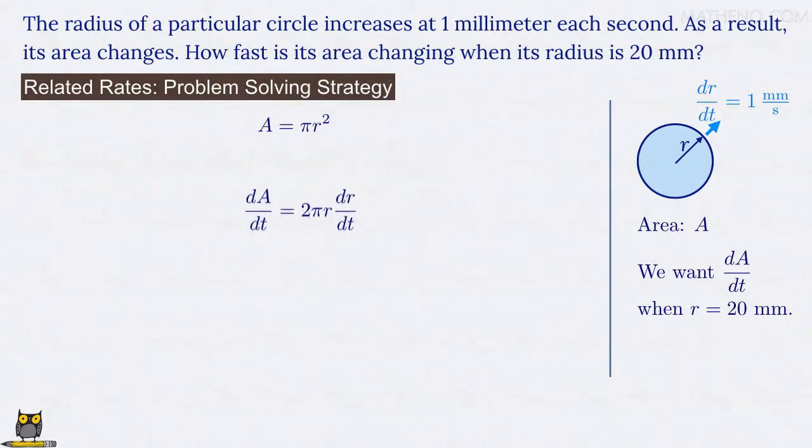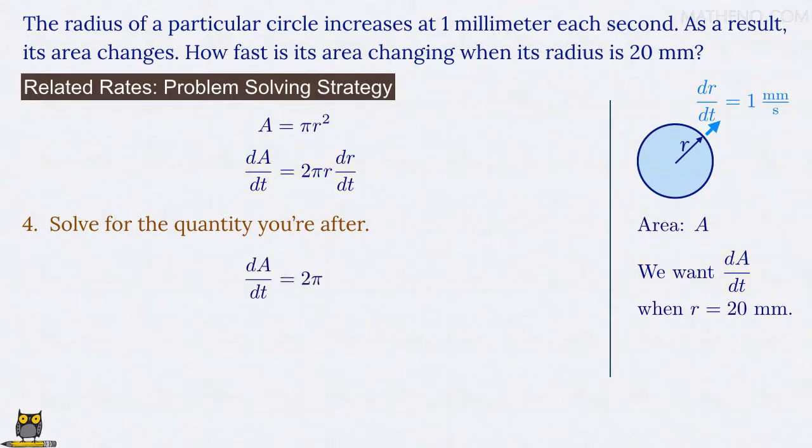The fourth and final step of our strategy is then simply to solve for the quantity we're after. Remember that we want the value of dA/dt, which we just found equals 2π r times dr/dt. So we have dA/dt equals 2π times r, and we're interested in the moment when r equals 20 millimeters, so we can make that substitution, and then times dr/dt, which equals 1 millimeter per second. And now just a little math. 2π times 20 times 1 is 40π, and the units are millimeters squared per second, which are just the units we expect for the rate of change of an area, which should be millimeters squared, with respect to time, which is measured in seconds. And that's it! Our final answer is 40π millimeters squared per second.